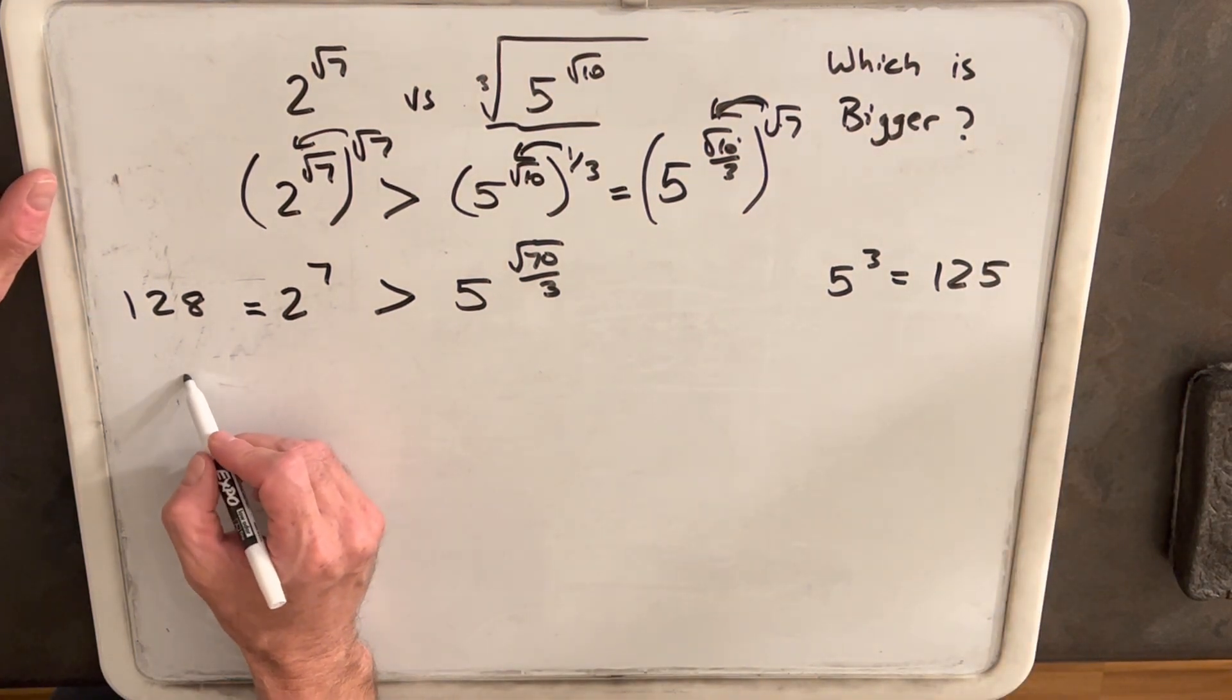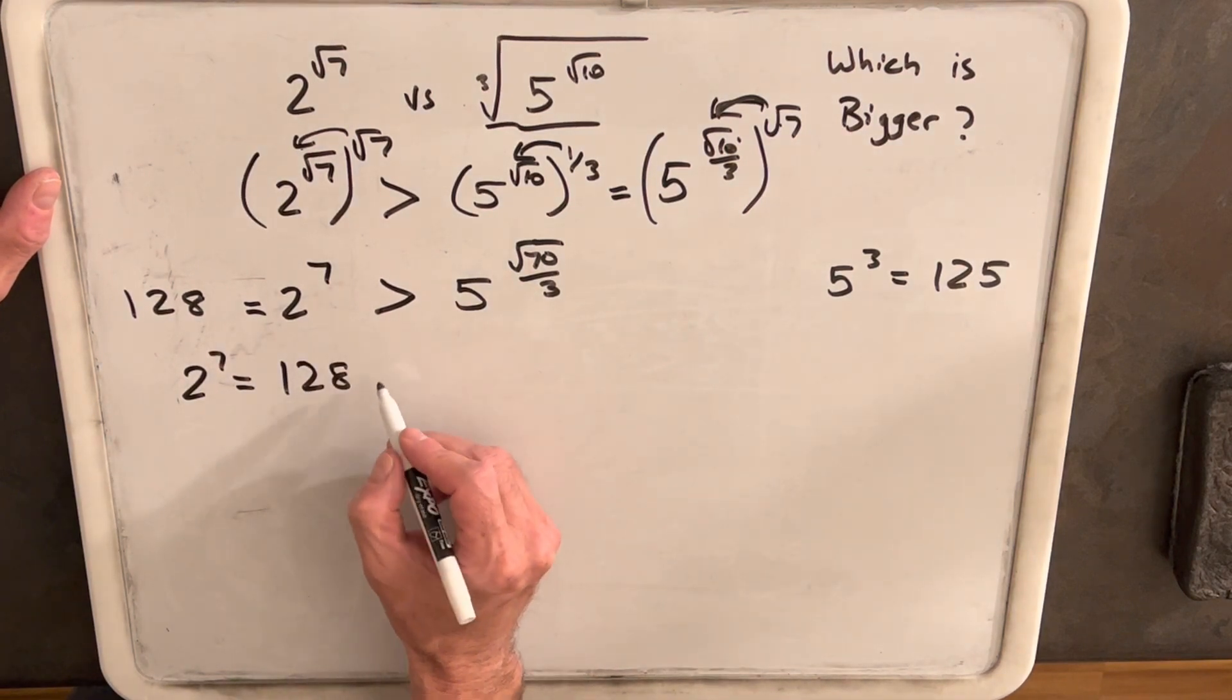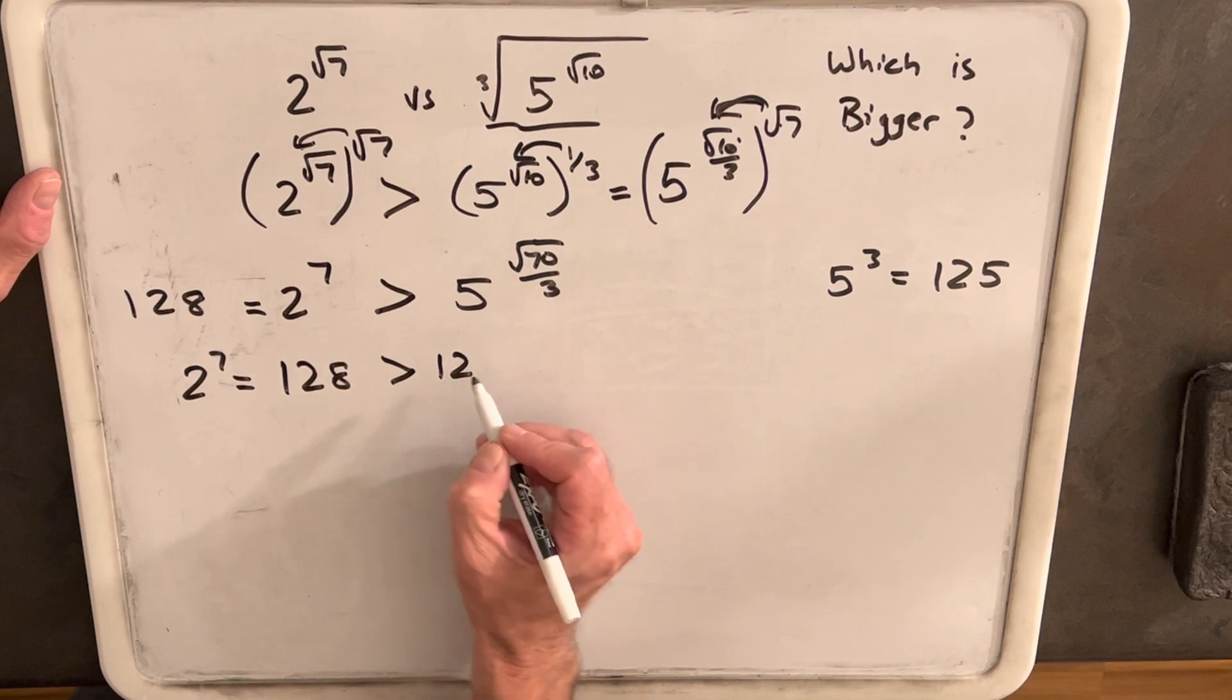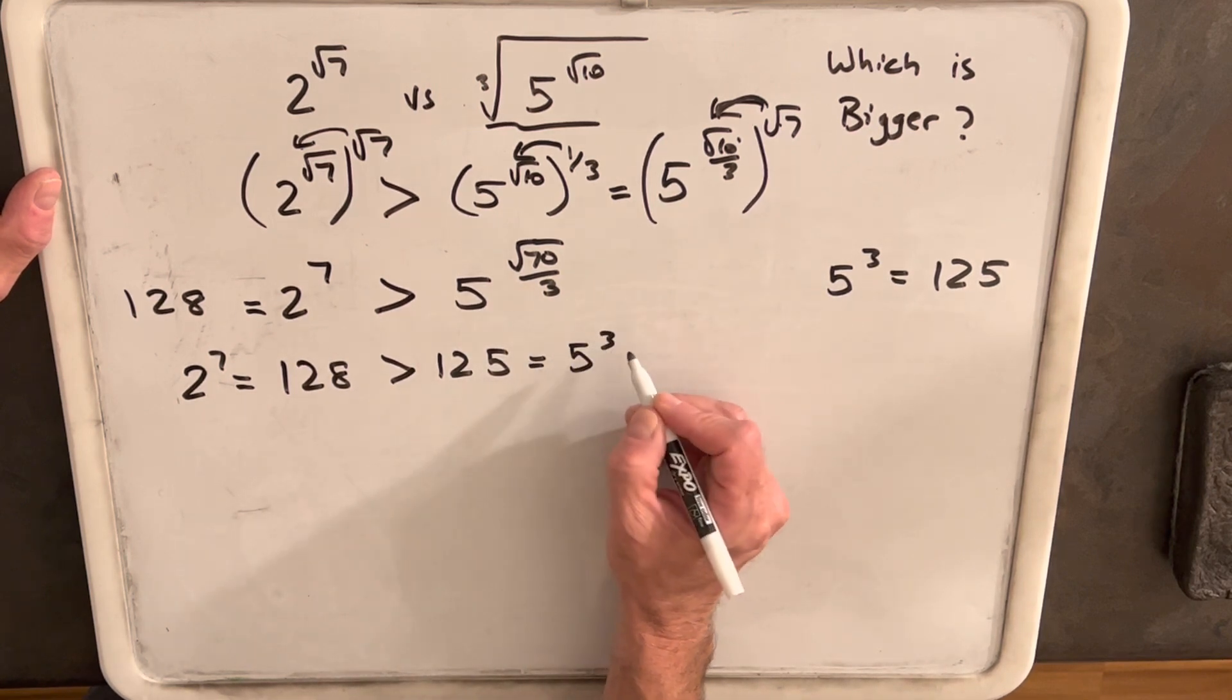So let's write our 2 to the 7th equals 128, which is greater than 125, which is just 5 cubed.